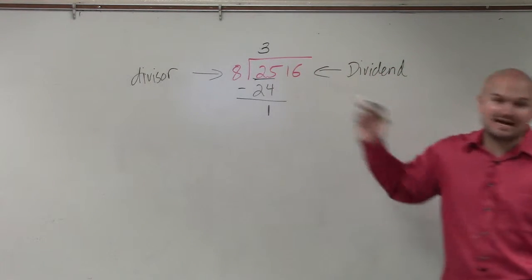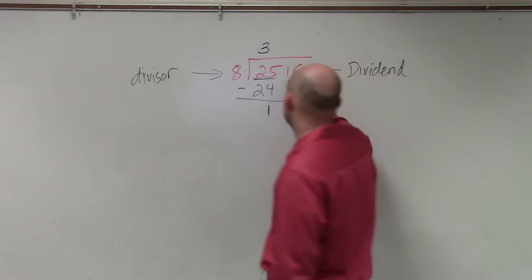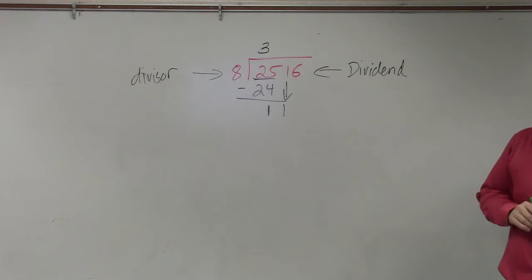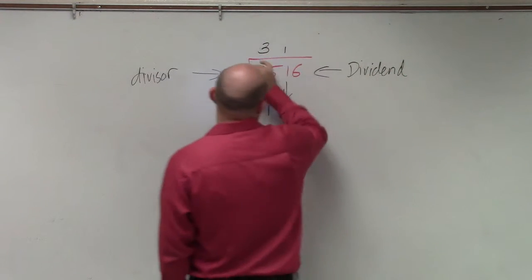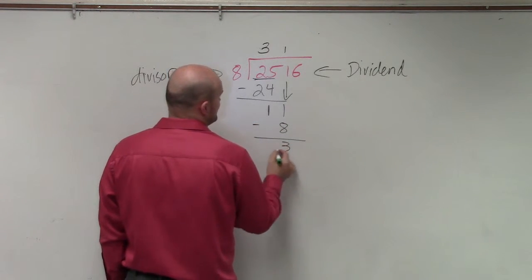Now again, 8 does not divide into 1. So I can move over to the next place value over here, which is 1. Now, 8 divides into 11 one time. 1 times 8 is 8. Subtract, you get 3.